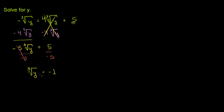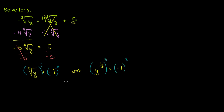The cube root of y is equal to negative 1. The easiest way to solve this is to take both sides of the equation to the third power. This statement is the exact same as saying y to the 1/3 power is equal to negative 1 — just two different ways of writing the same thing. So taking both sides to the 3rd power: y to the 1/3, raised to the 3rd, is y to the 1/3 times 3, which is y to the 1st power.